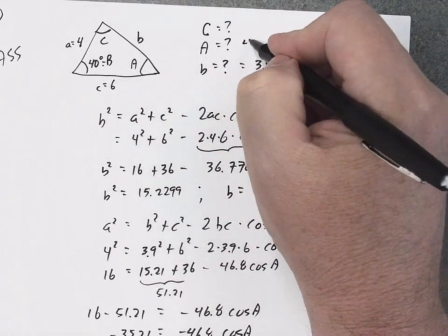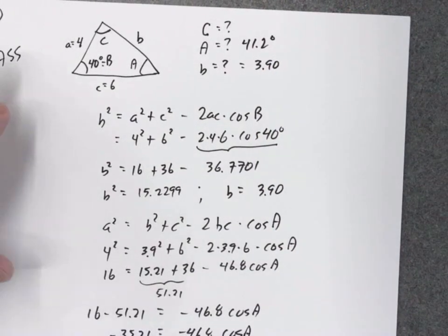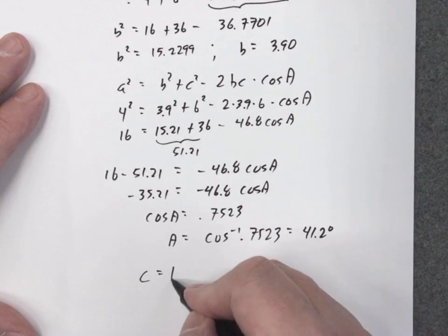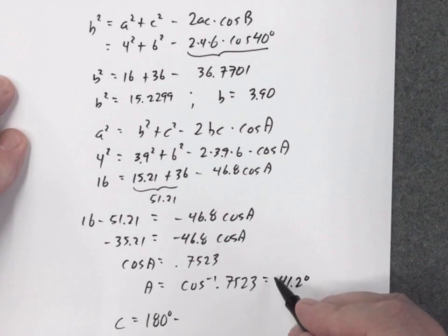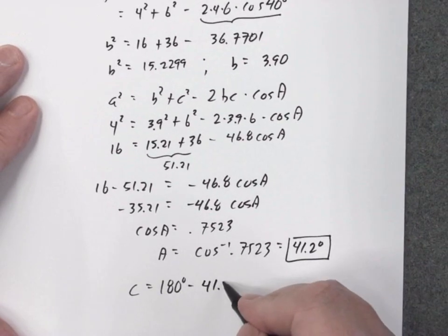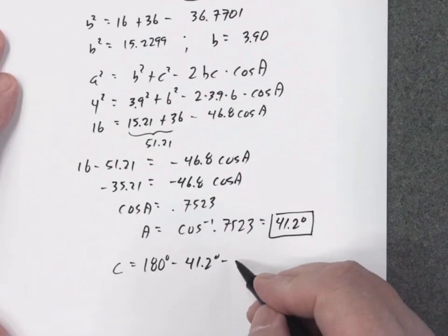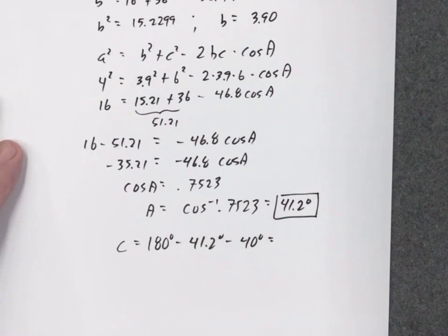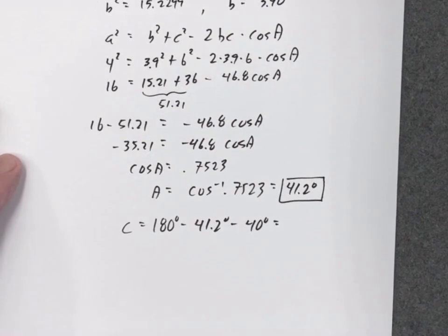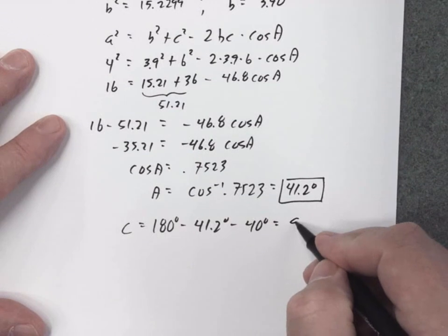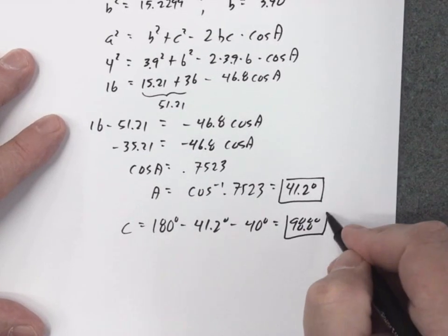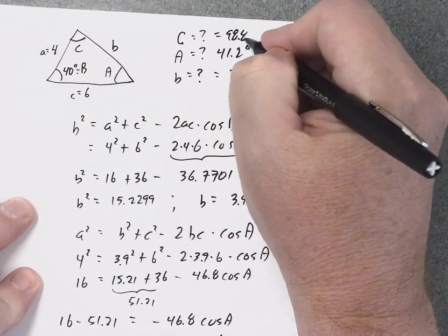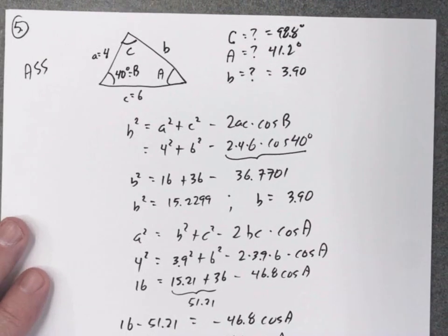We found angle A to be 41.2 degrees. Now to get angle C, since we know angle A and angle B, we simply use the fact that all angles sum to 180 degrees: angle C equals 180 minus 41.2 degrees minus 40 degrees. So 180 minus 41.2 minus 40 gives 98.8 degrees. That's the solution to problem five using the law of cosines.